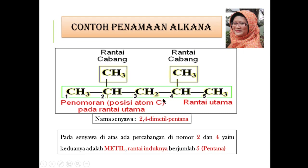Untuk penamaan alkana: tentukan rantai terpanjang sebagai rantai induk. Di luar rantai utama adalah cabang atau gugus — misalnya CH₃ adalah metil. Penomoran dimulai dari ujung yang dekat dengan cabang untuk mendapat nomor terkecil. Setelah itu sebutkan cabangnya: kalau sama pakai awalan (dua → di, tiga → tri, dst.). Lalu urutkan: nomor cabang, nama cabang, baru rantai utama.